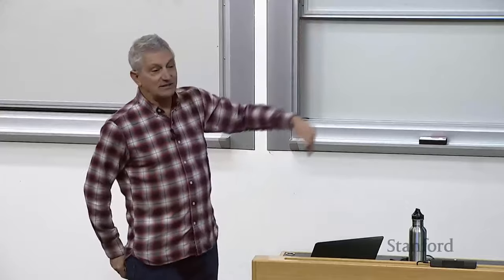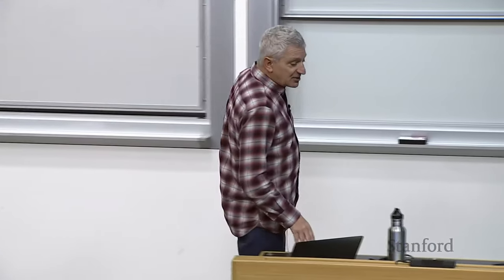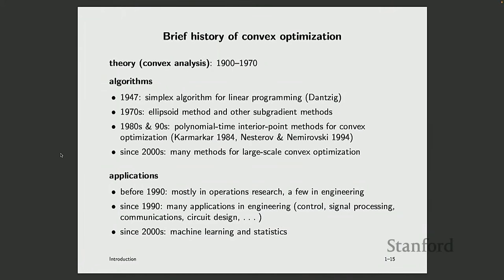Let me say a little about the brief history of convex optimization. As a mathematical field, it's at least 120 years old. People were writing down inequalities we would now call convex in the late 19th century, and it was codified around the turn of the last century — someone said, 'we keep seeing the same inequality all the time, let's give it a name.' That name became convexity. As a mathematical field, it was quite well developed by the 1920s through 50s. By the 70s, there was a beautiful book written on convex analysis — it was basically done, clean and wrapped up.